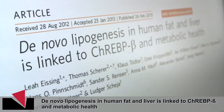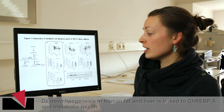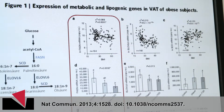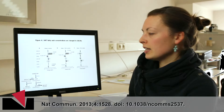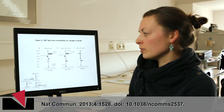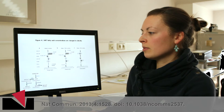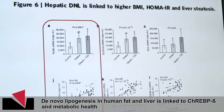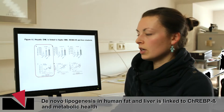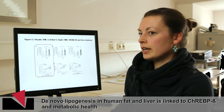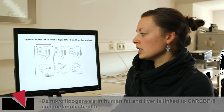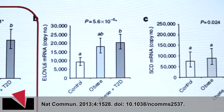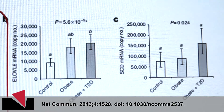First we looked at adipose tissue and we saw a downregulation of de novo lipogenesis key enzymes with obesity. We saw a change in fatty acid distribution, which is the result of the dysregulated enzymes. In the liver, we saw the inverse regulation, where de novo lipogenesis genes are upregulated with obesity, and their expression correlates with steatosis, so they are important in fatty liver disease.